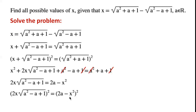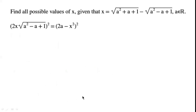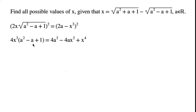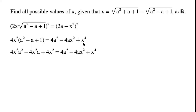We square both sides of the equation again. The left-hand side becomes 4x squared times a squared minus a plus 1, and the right-hand side becomes 4x squared times a plus x to the power of 4. Expanding the left-hand side gives 4x squared times a squared minus 4x squared times a plus 4x squared.